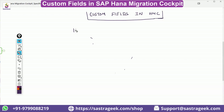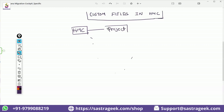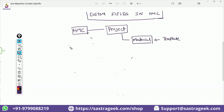When you create your HANA Migration Cockpit, the first thing you do is create your project. Under the project, you say you want to load the material, so you activate a material template. At the back end, a copy of the standard material object has been created under your project.